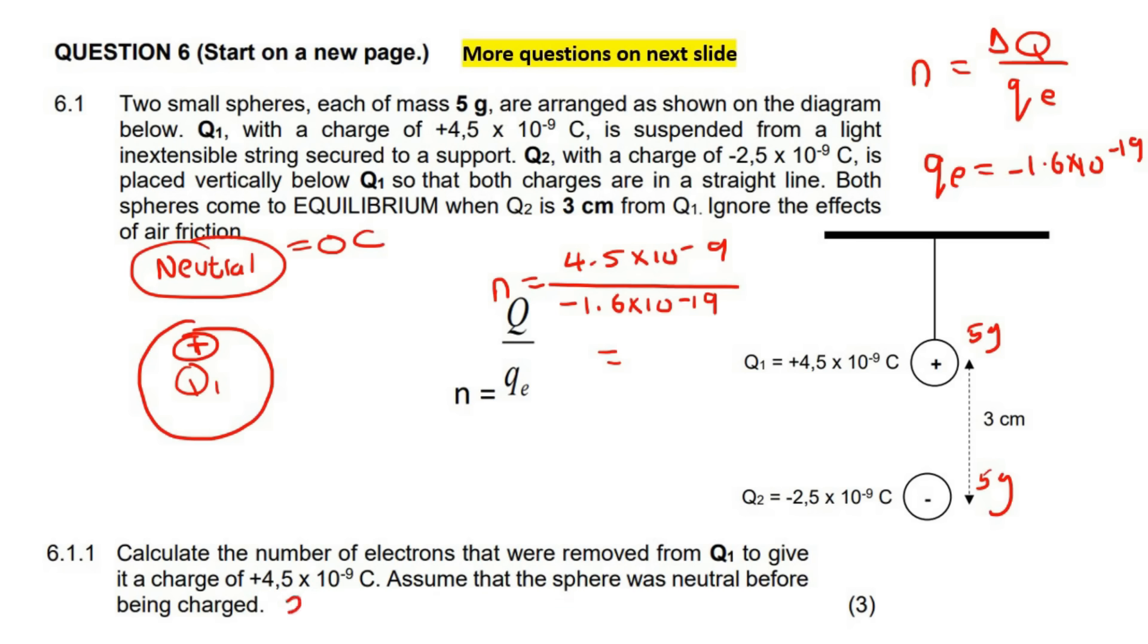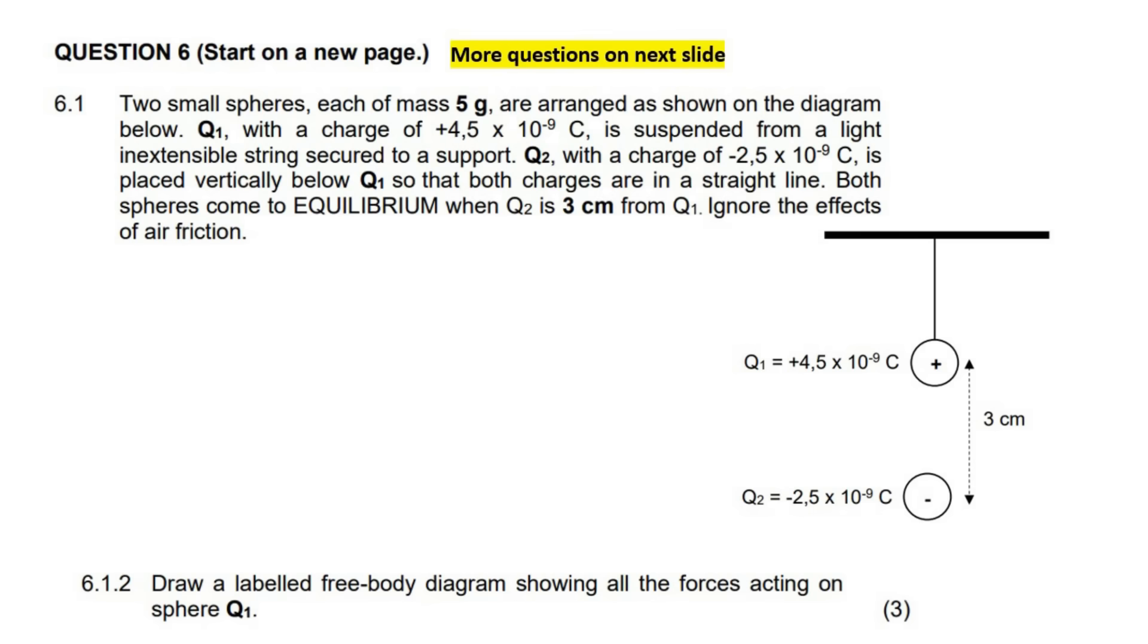If you calculate this now, yes it even says assume the sphere was neutral. We get 2.81 times 10 to the power of 10 electrons. And I know that some of you got a negative answer, but the negative is not actually important in that formula because we're just calculating the number of electrons. You can't have a negative number of electrons as your answer.